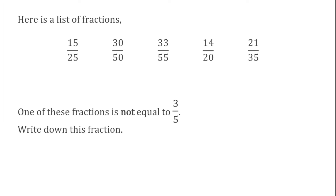For this first fraction we've got 15 over 25. The highest common factor of both numbers is 5, so I'm going to divide the top by 5 and the bottom by 5. 15 divided by 5 gives me 3, and 25 divided by 5 gives me 5. So that one is equivalent to 3 fifths — it's not going to be the first one.